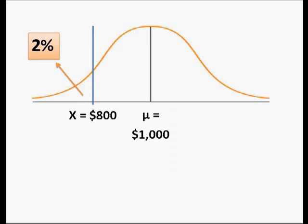So this is what my curve looks like when I translate that problem into a picture. I know I was given that the mean or average salary of the workers is $1,000 per week. We were told that 2% of the employees earn less than $800. That allows me to locate this value of X on the curve. And since I know only 2% earn less than $800, it has to go into this lower tail of the curve.